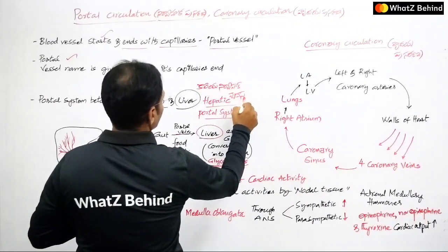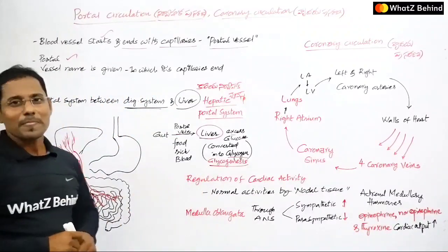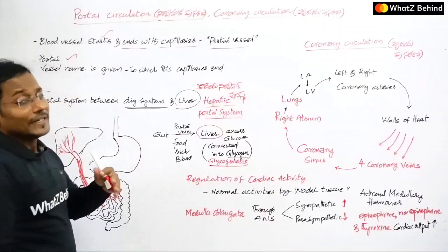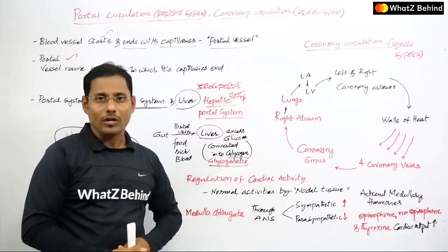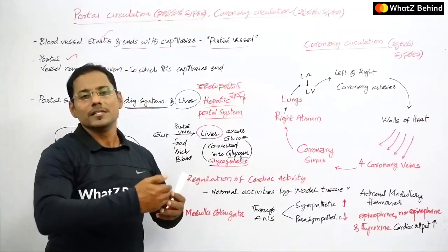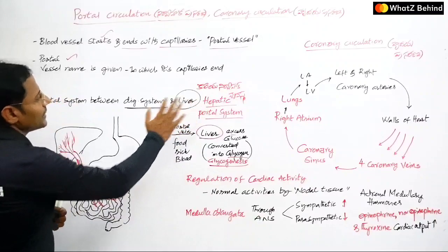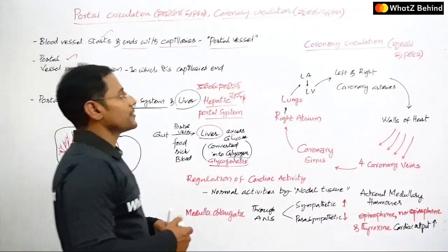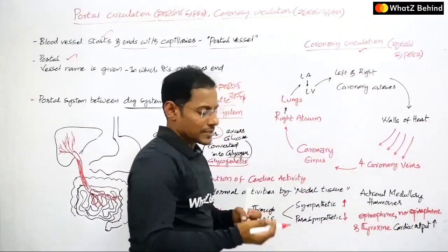Similarly, depending on where the capillaries end in a particular organ, the system is named accordingly. For example, if the capillaries end in the lungs, it can be called the pulmonary portal system. That is how portal systems are named based on the organ. Now let's move to the next topic: coronary circulation, which is hridaya prasarana.